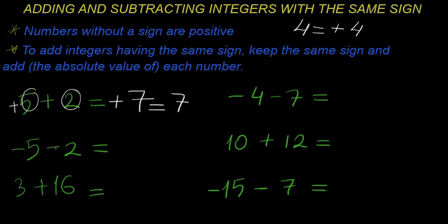In this example, both signs are negative, so the answer will be negative. We add five and two: five plus two is seven, so the answer is negative seven.